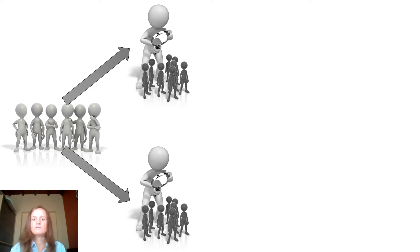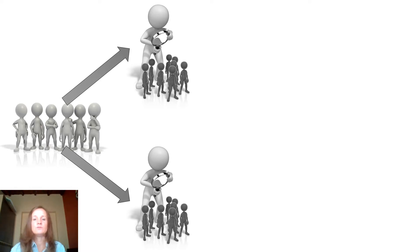In a trial, the participants are divided into two or more groups through a process called randomization. Commonly, trials have two groups, so for the purposes of this example, we'll divide our participants into two groups as well.